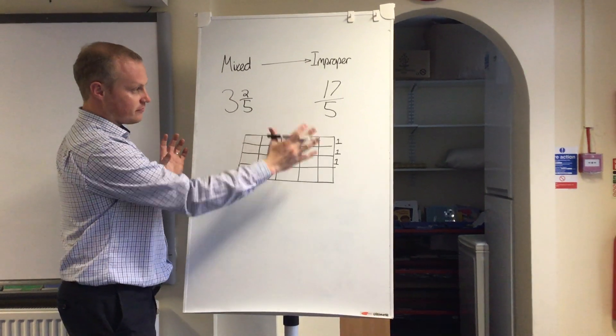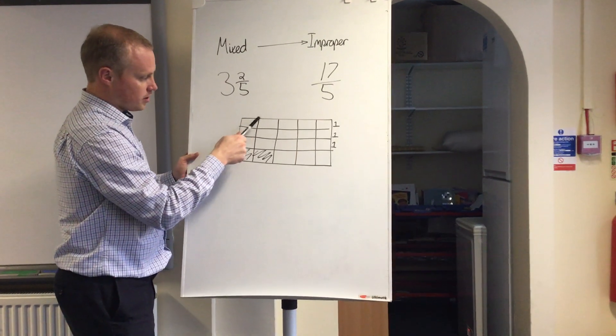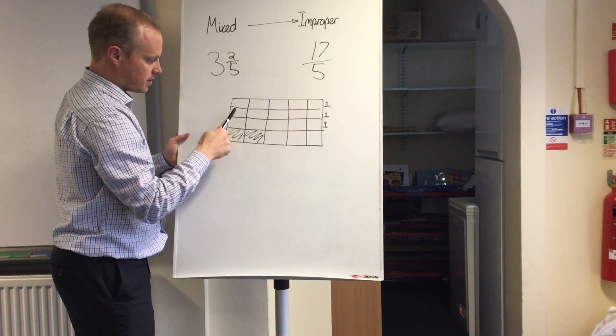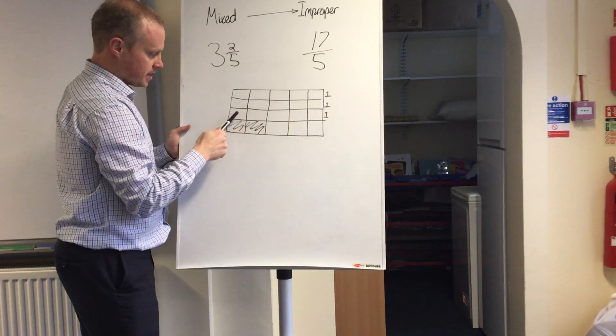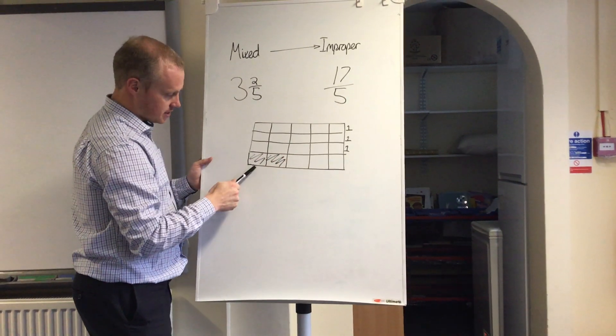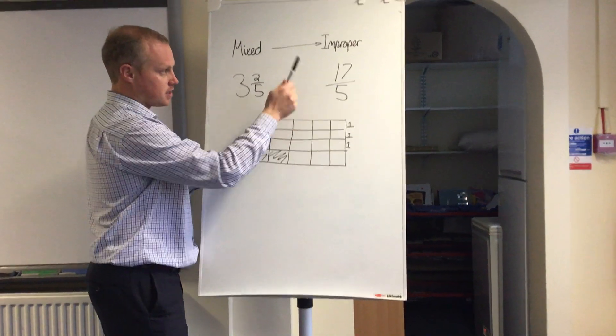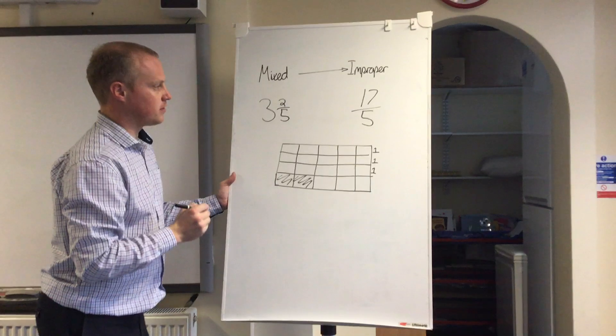So now if you look at the fifths individually, you'll see we've got 1, 2, 3, 4, 5, 6, 7, 8, 9, 10, 11, 12, 13, 14, 15, 16, 17. So that is where the 17/5 comes from.